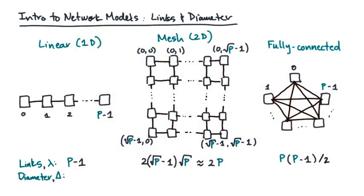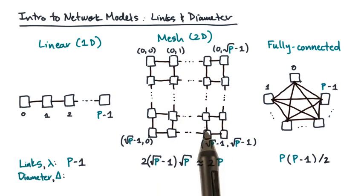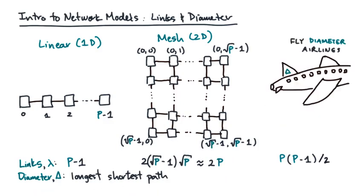A second important property of a network is its diameter. To calculate it, you take all pairs of nodes and compute the shortest path. Then you take the longest such path. That longest shortest path is the diameter, which I'll denote by capital delta.